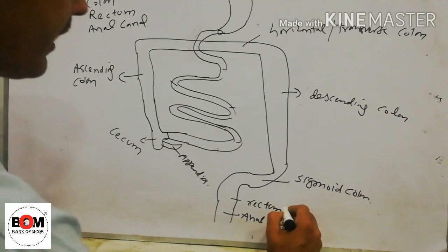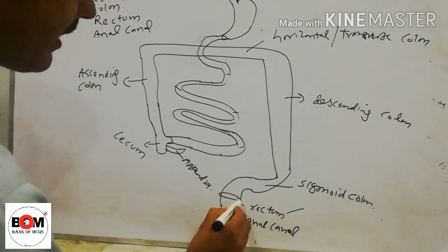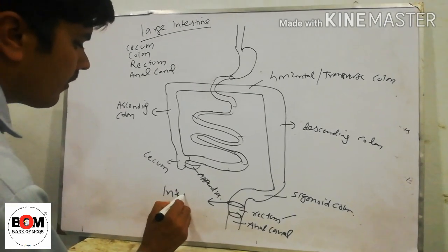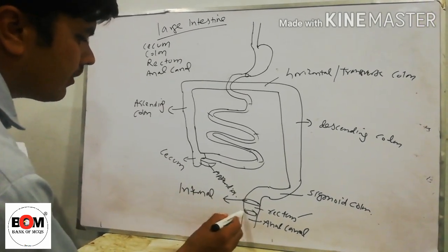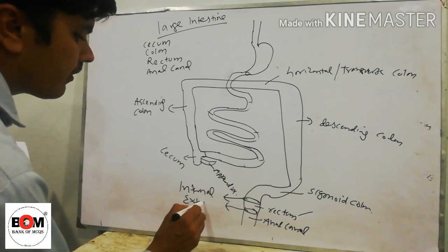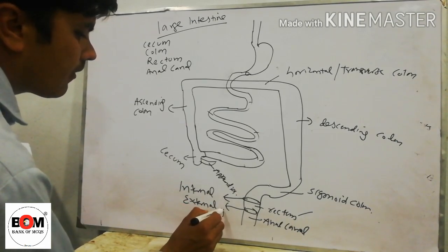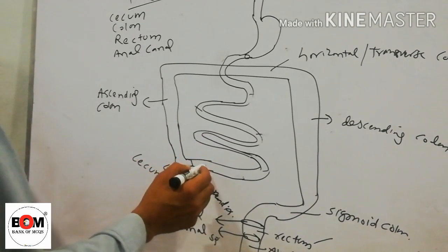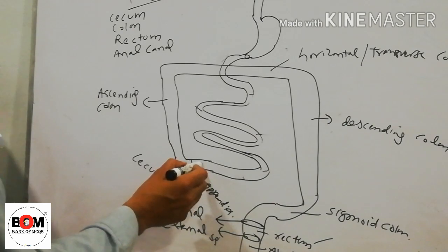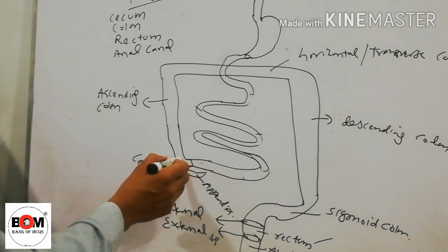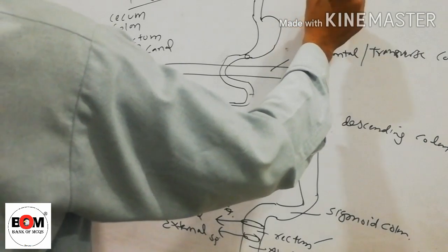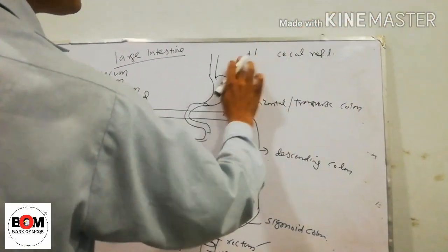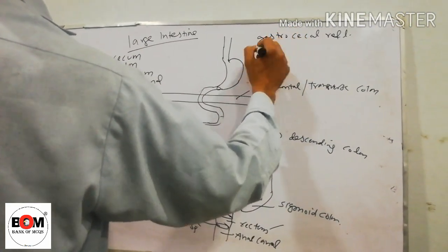In the rectum, there are two sphincters: the internal sphincter above and the external sphincter below. The food from the ileum enters into the large intestine through a reflex called the ileocecal reflex and also the gastrocecal reflex.